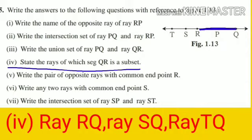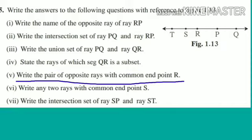Question four: state the ray of which segment QR is the subset. Subset means the part. See in the figure — segment QR lies under ray RQ, ray SQ, and ray TQ.